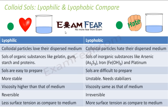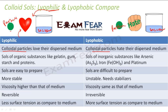Let's compare lyophilic and lyophobic. Lyophilic: particles love the solvent or medium. Lyophobic: particles hate the solvent or medium. Examples of lyophilic: gelatin, gum, starch, or proteins. Examples of lyophobic: arsenic, iron, or platinum in water. Lyophilic is easy to prepare because they love each other. Lyophobic is difficult to prepare because they hate each other. Lyophilic colloids are more stable; lyophobic colloids are unstable and need stabilizers.